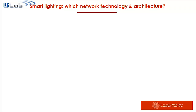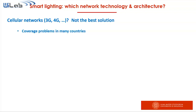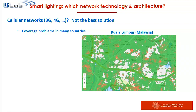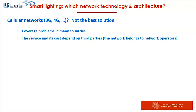Wireless is good. But which kind of technology and which network architecture? Should we use cellular networks? For this kind of service, this is not the best solution. They have coverage problems in many countries — this is an example taken from Kuala Lumpur where Y4B is deploying a smart public lighting infrastructure. As you can see, there are several gray zones where the cellular network does not provide any coverage, so in those zones the public lighting would not work. Furthermore, the service cost depends on third parties: if the network operator decides to increase the cost, the light operator has no choice but to pay.